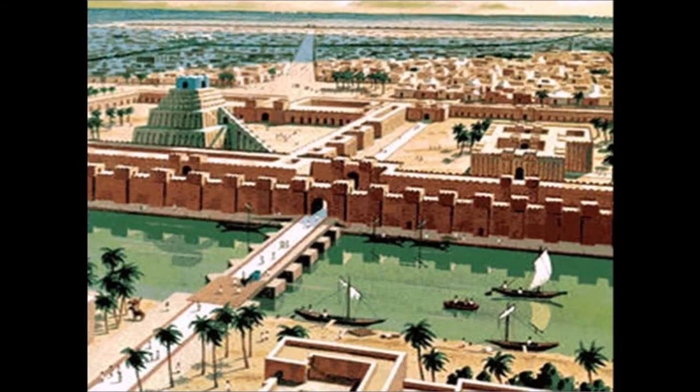Cities and Town Plans. The Mesopotamian cities featured mud or baked brick walls with gates. Some people lived in reed huts outside the cities. Ziggurats were at the city center on a platform, surrounded by complexes of ceremonial courtyards.